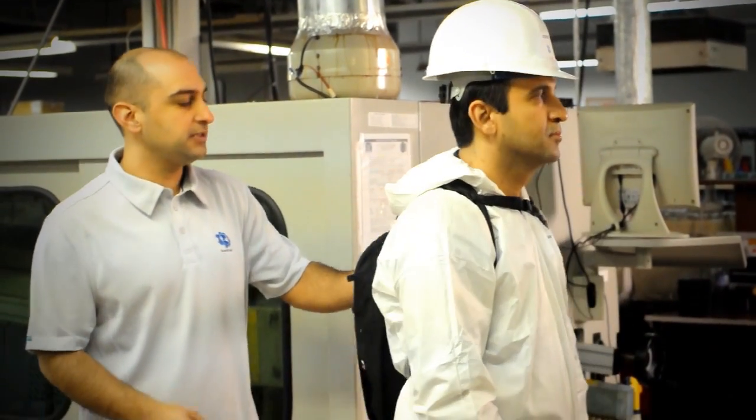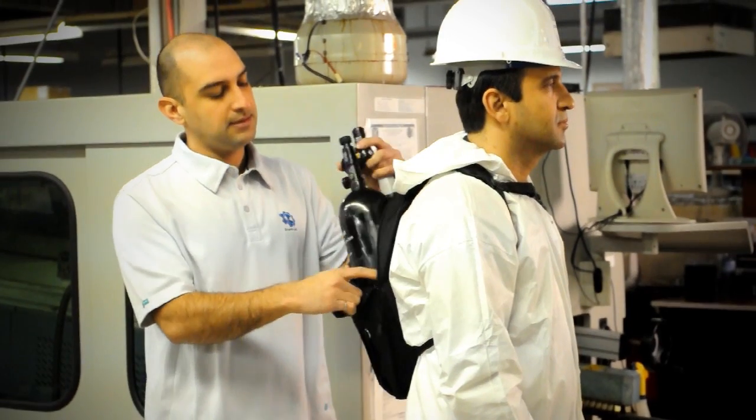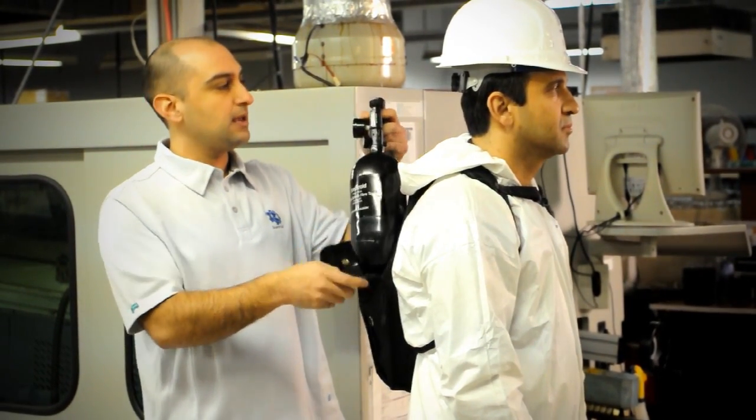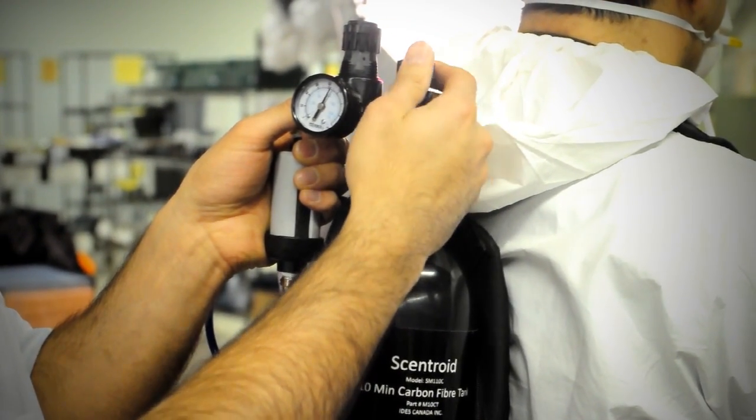So Darius is wearing the SM100. The first thing we're going to do is take out the tank. Here you see the carbon fiber tank filled with fresh air and I'm just going to help Darius by turning on the unit, the main valve.